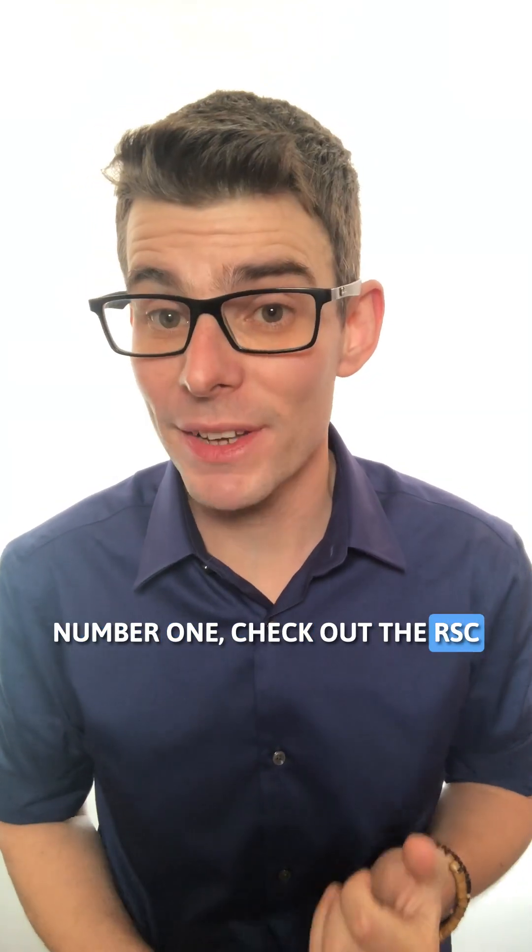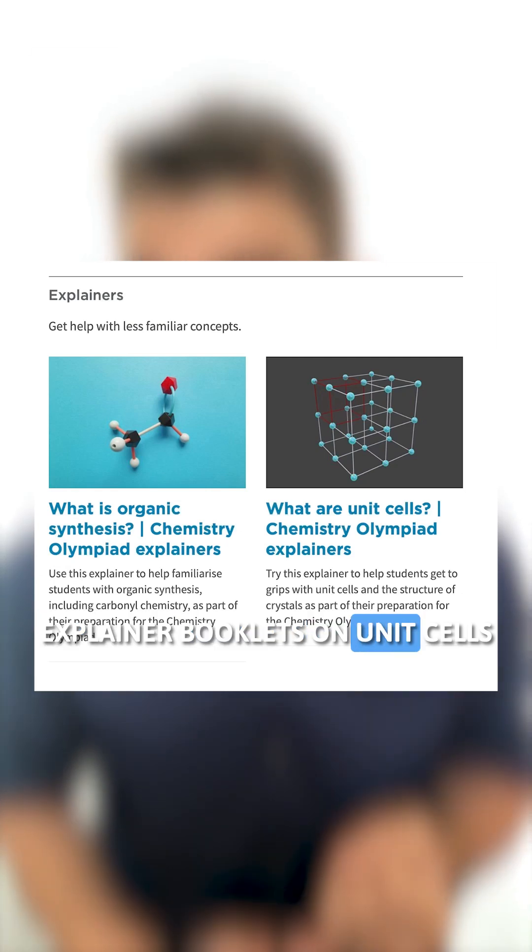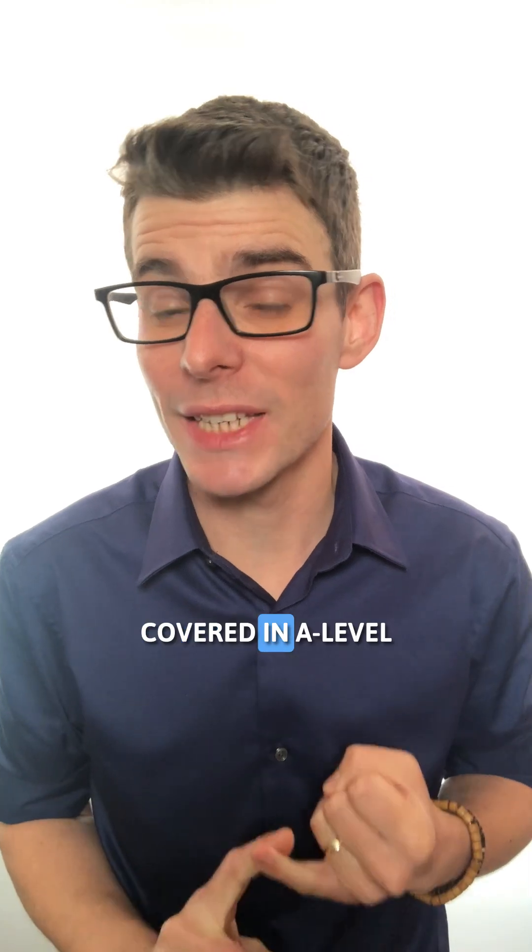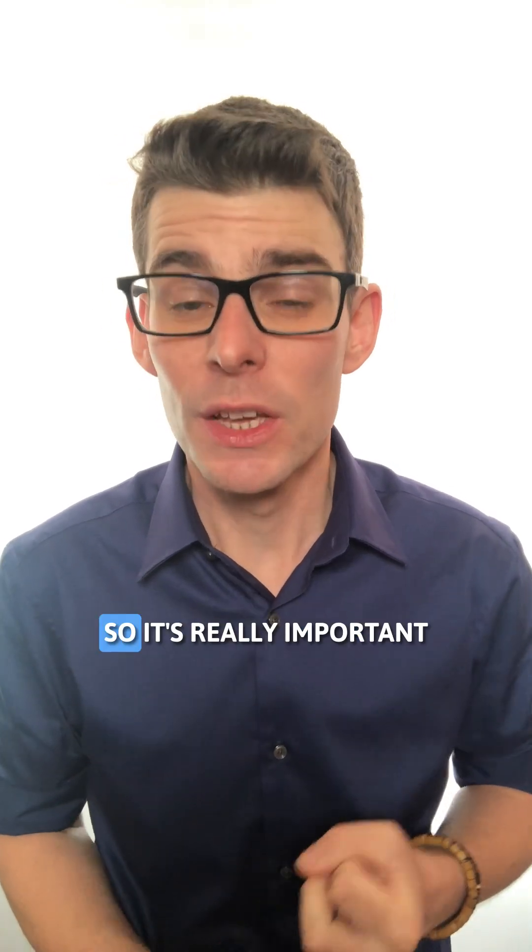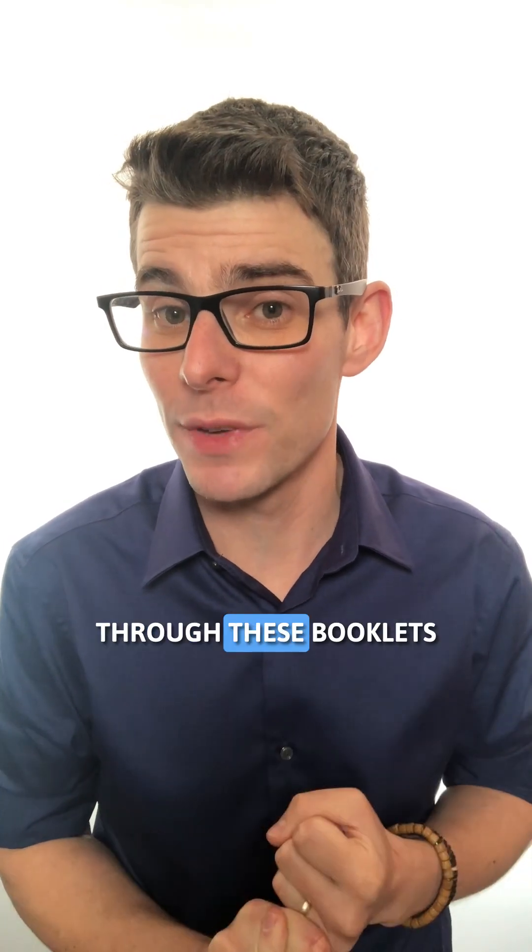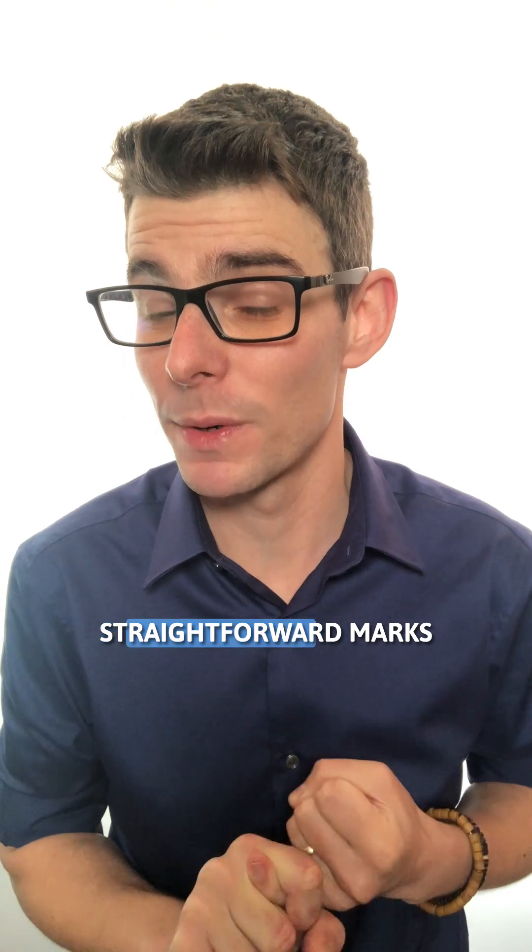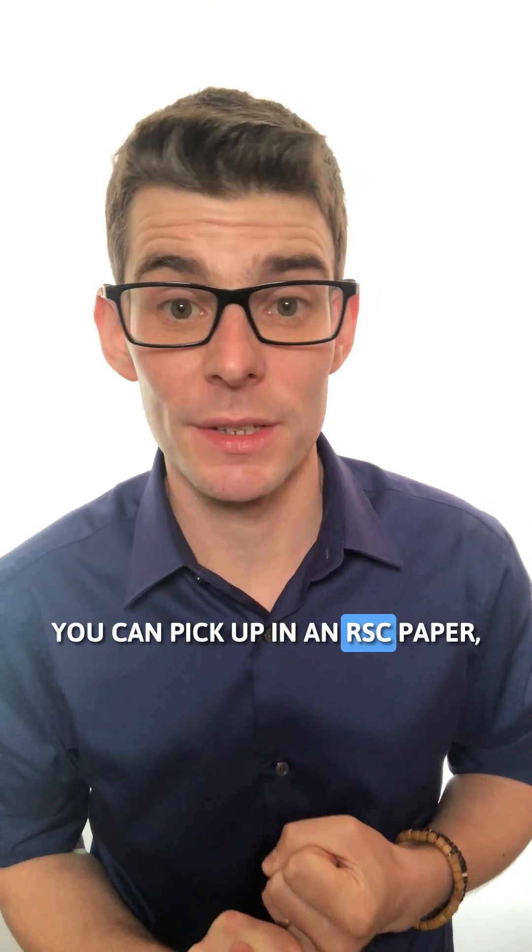Number one, check out the RSC Explainer booklets on unit cells and organic chemistry. Unit cells aren't covered in A-level or IB chemistry, so it's really important you have a look through these booklets because they can give you some really good tips with some relatively straightforward marks you can pick up in an RSC paper.